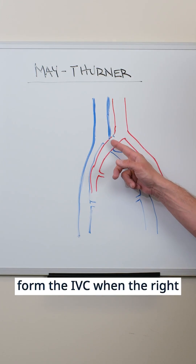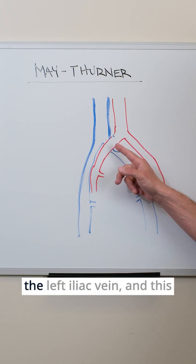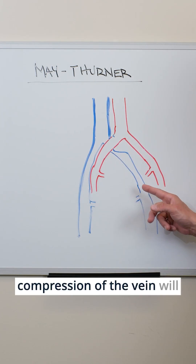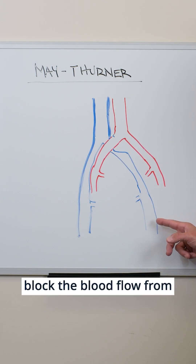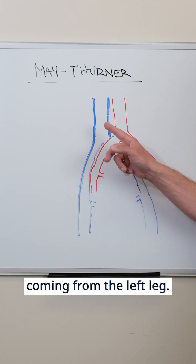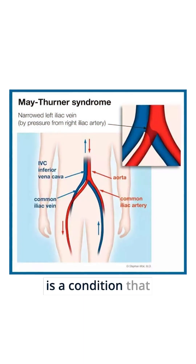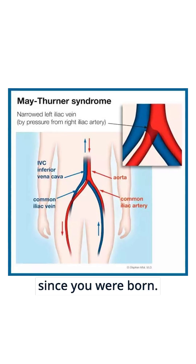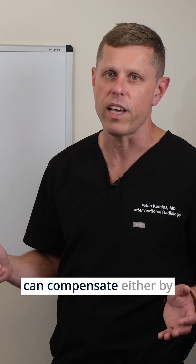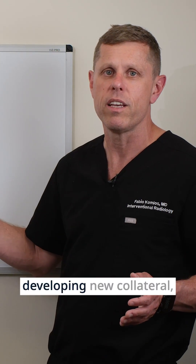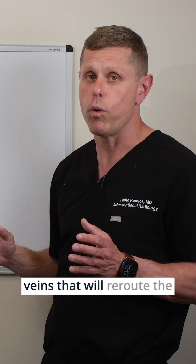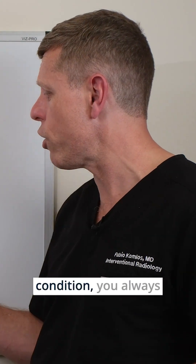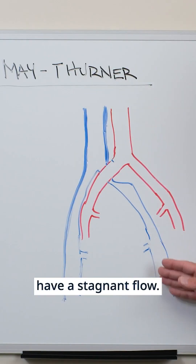In May-Turner syndrome, the right iliac artery compresses the left iliac vein, and this compression blocks blood flow from coming from the left leg to the heart. This is a condition that is most commonly present since birth. Most people over time can compensate by developing new collateral veins that reroute the blood flow to the heart.